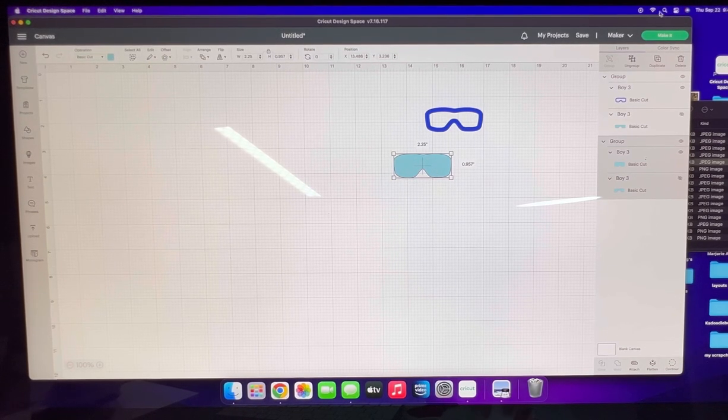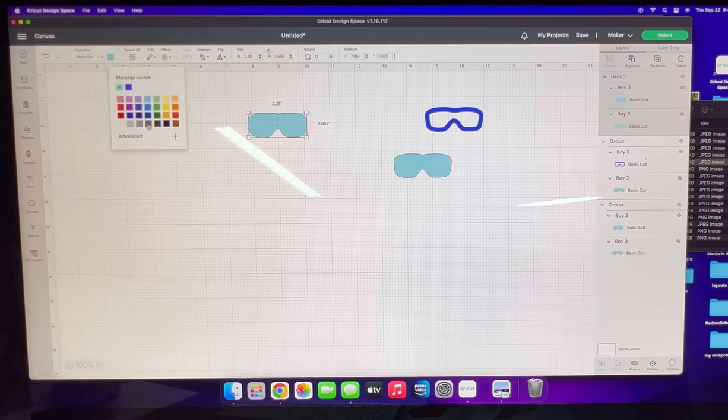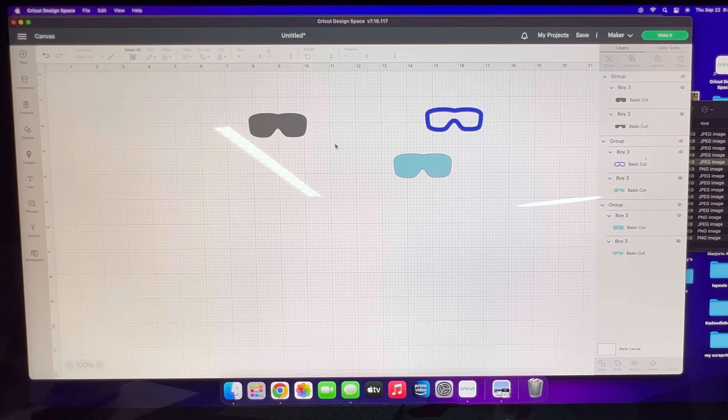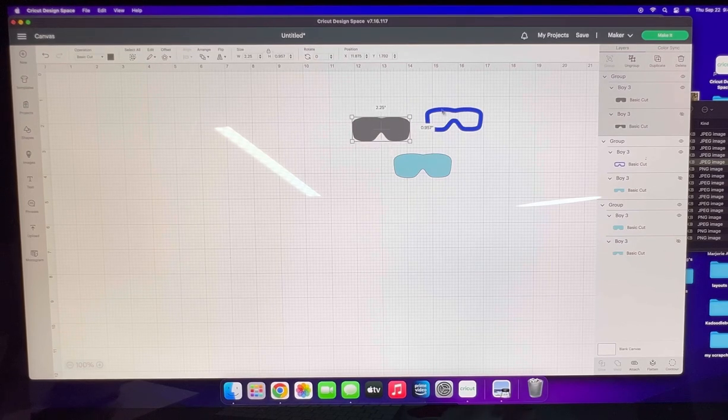I'm going to duplicate this one more time and change the color. We'll make that one gray so I can do it in three layers. You're going to have three of the same shapes, but two with no contour.